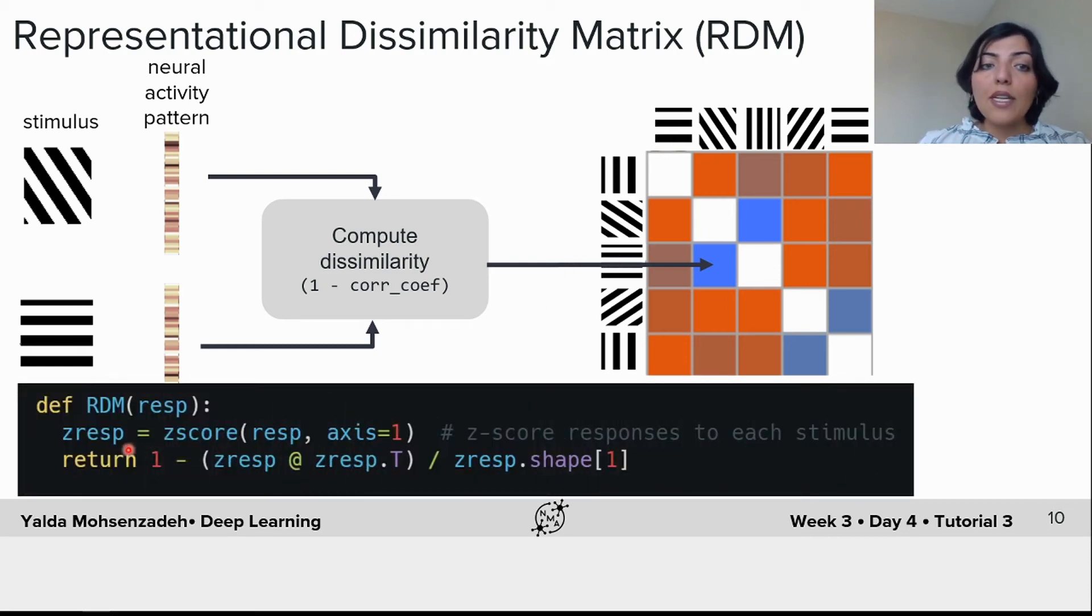You can compute this matrix easily by these few lines of code. First, you would standardize your neural activity responses by computing the z-score of these responses, which is basically normalizing by the mean and standard deviation, and then computing one minus correlation of these z-scored responses.